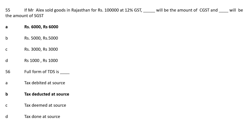Question No. 55. If Mr. Alex sold goods in Rajasthan for Rs 1 lakh at 12% GST, dash will be amounted to CGST and dash will be amounted to SGST. When it is an intrastate supply, CGST and SGST will be charged. At 12% GST on Rs 1 lakh, the total GST is Rs 12,000, divided equally: Rs 6,000 to CGST and Rs 6,000 to SGST. Correct answer: Rs 6,000 CGST and Rs 6,000 SGST.